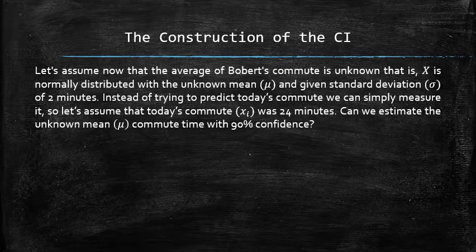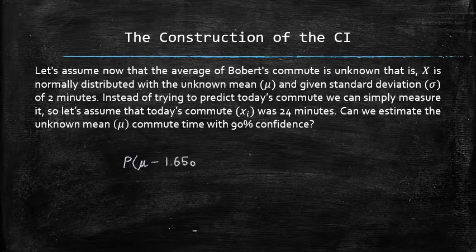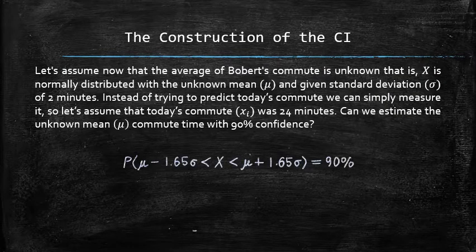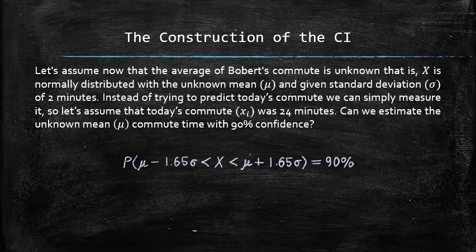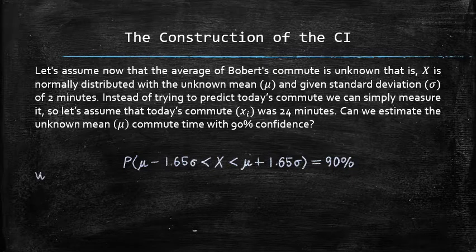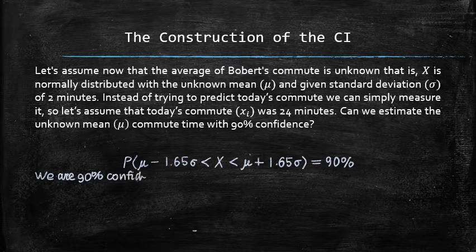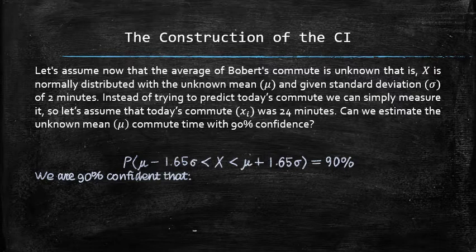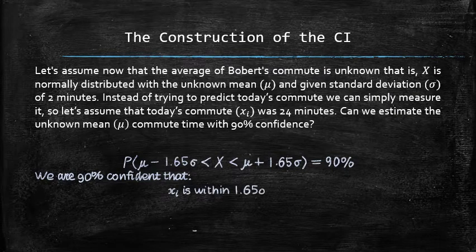We are going to construct an interval estimate with a 90% confidence. By the generalized empirical rule for α equals 0.10, we get the probability of a random observation X to be within 1.65 sigmas from μ equal to 90%. This means that we are 90% confident that a random observation xi is within 1.65σ from μ.